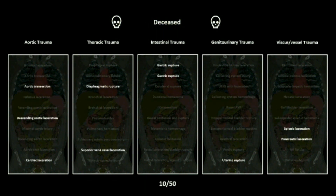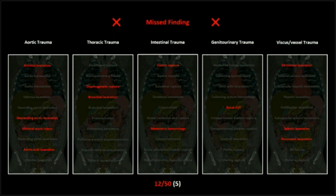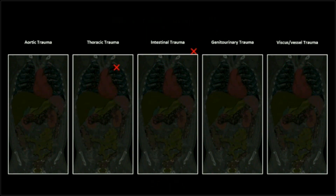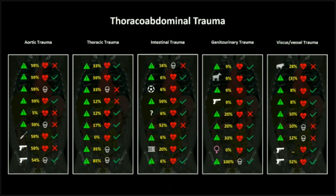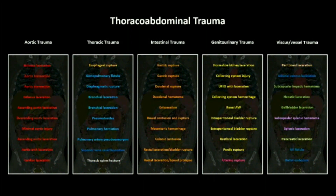Whether or not the patient lived is certainly an item of interest. A deceased patient will be designated with that ghoulish skull icon. And then whether the radiologist actually made the call or not — did they see the finding? That'll be a red X if the radiologist missed the finding, like Ms. Othmar used to put on your grade school tests. All these icons appear at the bottom of the screen.